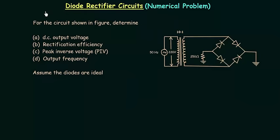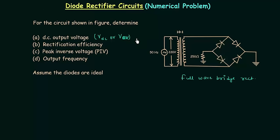In this lecture I will solve one numerical problem based on diode rectifier circuits. We have a full wave bridge rectifier given in the problem and we need to calculate four parameters: DC output voltage, rectification efficiency, peak inverse voltage PIV, and output frequency FO.